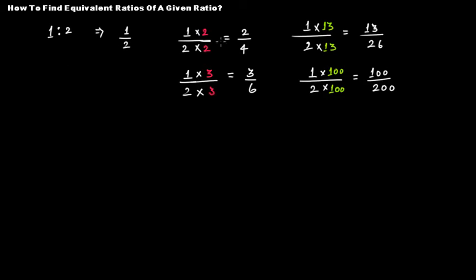So the point is that if there is a given ratio and you represent it in the form 1:2, if you multiply both numbers by the same number, you'll get an equivalent ratio. You can find any number of equivalent ratios by just multiplying.